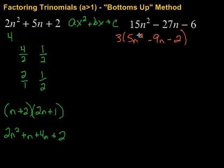So 5 times negative 2, that gives me negative 10. Then I'm going to look for factors of negative 10 that will combine to give me negative 9.